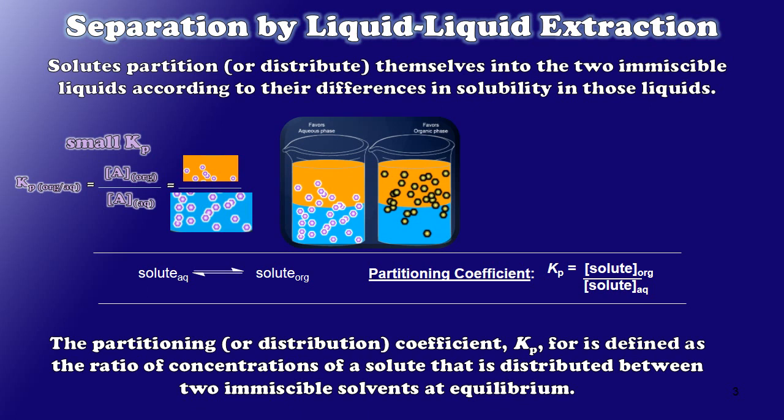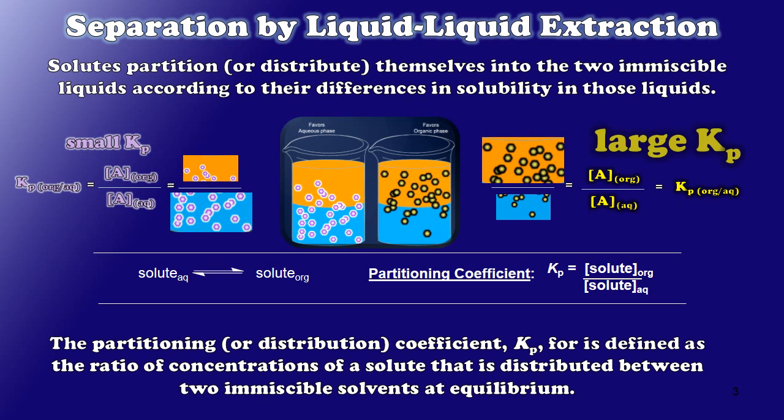However, my lower polarity compound has a partitioning coefficient that's also its concentration in the organic divided by its concentration in the aqueous layer. But this time that means a large number over a small number, or a large Kp as I've defined it. So what's important here is that the Kp values are as different from one another as possible. The more different they are from one another, the more effective my liquid-liquid extraction will ultimately be.